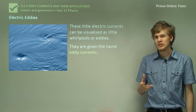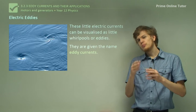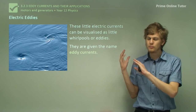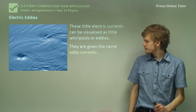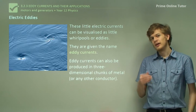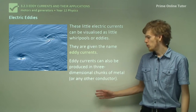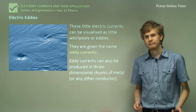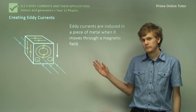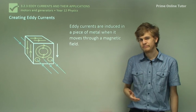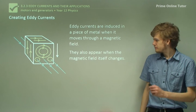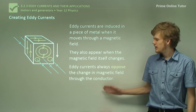So that's why we call them eddy currents — the little whirlpools or vortices of current that appear in a piece of metal when a magnet moves near them. Eddy currents can also be produced in three-dimensional chunks of metal, or any other conductor, whether that's salt dissolved in water, a plasma, or something like that. Eddy currents are induced in a piece of metal when it moves through a magnetic field, for instance when a block of metal starts falling into one. They also appear when the magnetic field itself changes. In both cases, eddy currents always oppose the change in magnetic flux through the conductor.